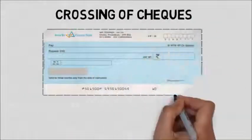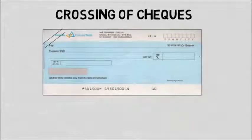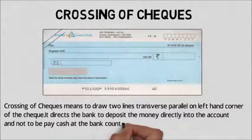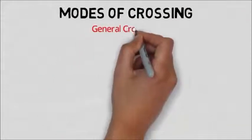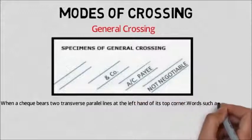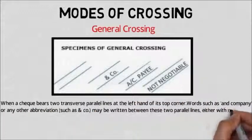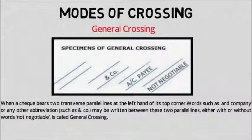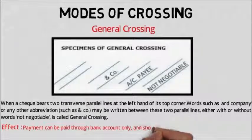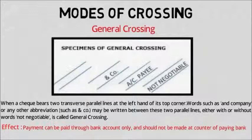The crossing of a check means drawing two transverse parallel lines on the left corner of the check. It directs the bank to deposit money strictly into the account of the payee and not to pay cash at the counter. There are different modes of crossing. In general crossing, a check bears two parallel lines at the top left corner with words such as 'and company' or abbreviations, either with or without the words 'not negotiable.' Payment can be made through a bank account only and not at the counter.